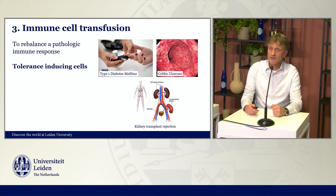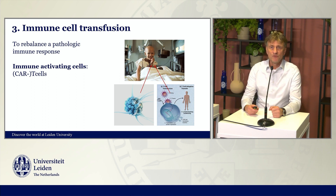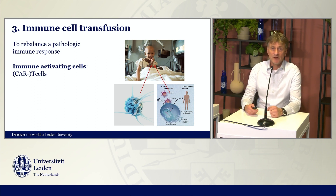When you need an organ transplant, rejection is always a risk, and tolerance-inducing cells could reduce this rejection. The last and very exciting example of immune cell transfusion is immune-activating cells, which can directly combat cancer in a very specific way. You must have read about these CAR-T cells, which are now an immense success in curing patients who otherwise would die.